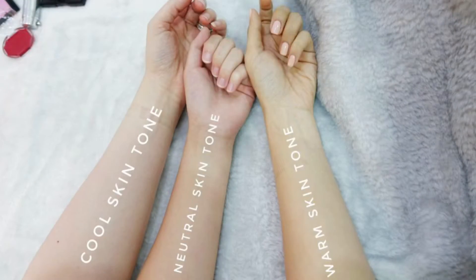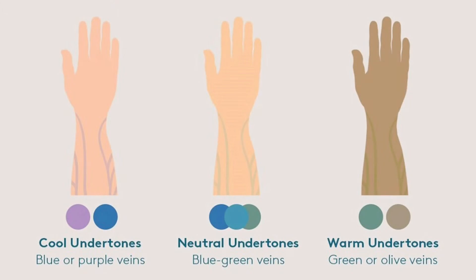How do you know which one you are? There are three ways: the sun test, the vein test, and the jewelry test. I've already mentioned the changes that can happen to your skin when exposed to sun. For the vein test: if you have a warm skin undertone, when you look at your veins you're going to see more of a greenish color. If your veins appear bluish-green, that would likely indicate a neutral undertone.